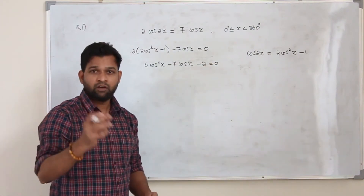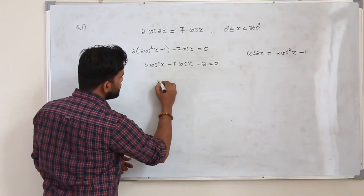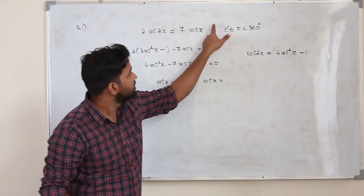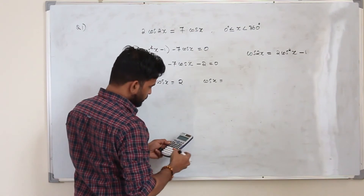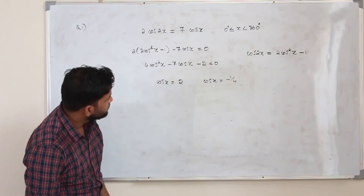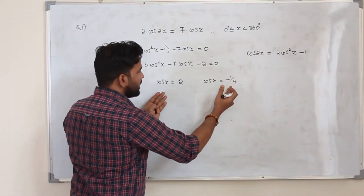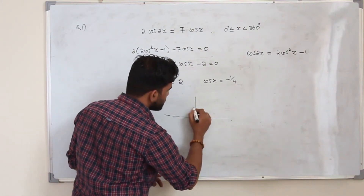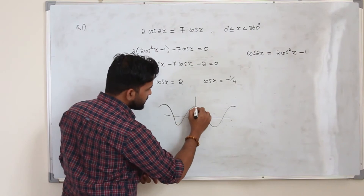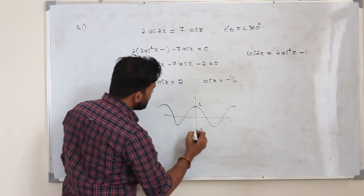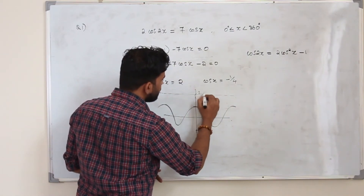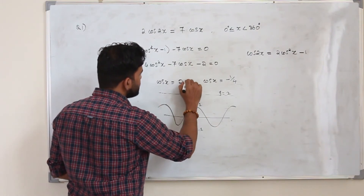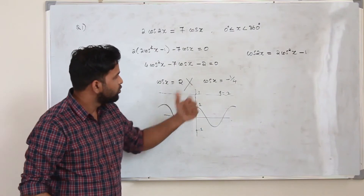This is a quadratic equation in cos x. Solve this quadratic equation — you will get two solutions for cos x, then solve them separately within the interval. The first value is 2 and the second is −1/4. Now we need to solve these two trigonometric equations separately within the given range. When you look at cos x = 2: the cosine graph has a maximum value of 1 and minimum of −1, so the line y = 2 gives no point of intersection. This value is out of range, so there is no solution — neglect this and move on to the second equation.